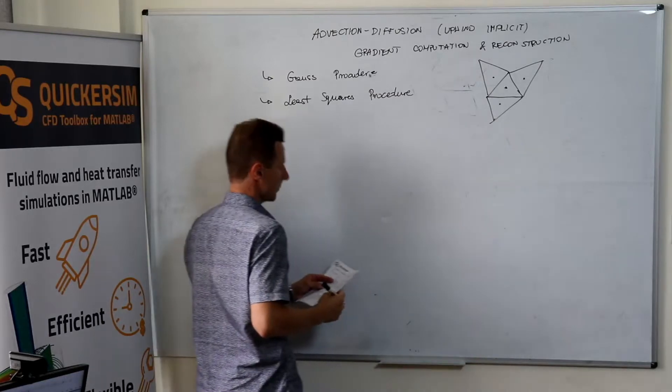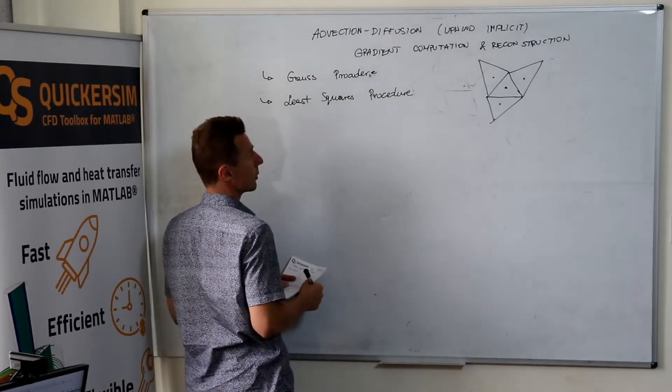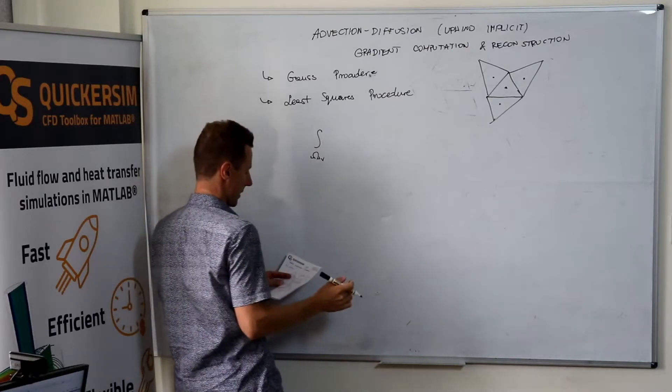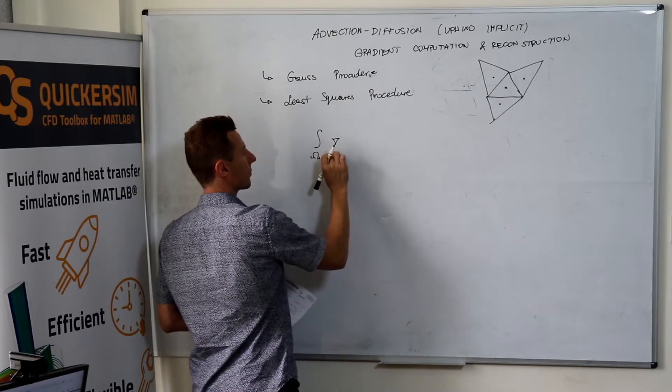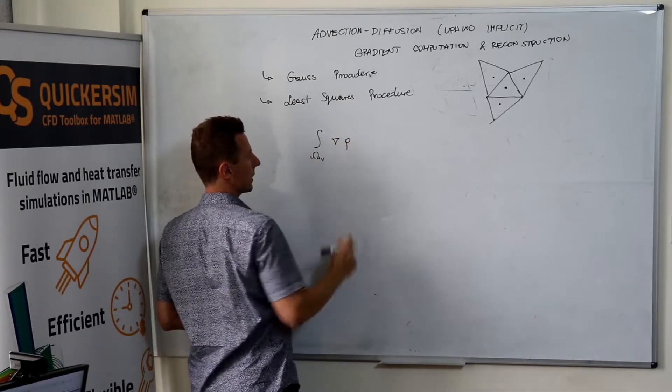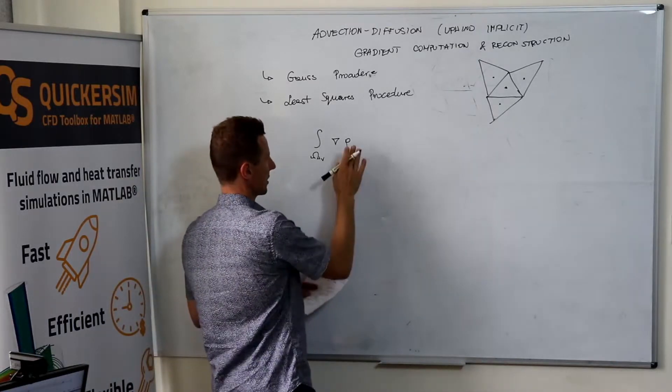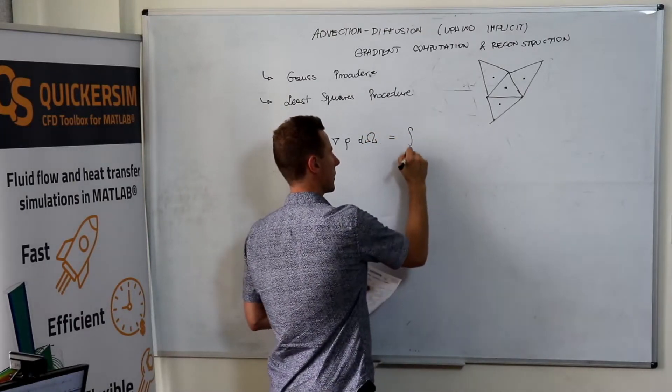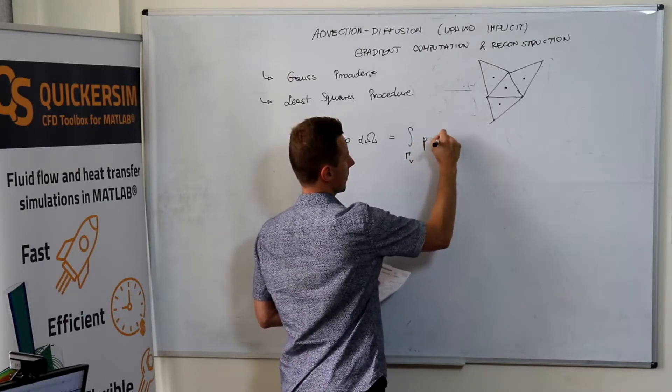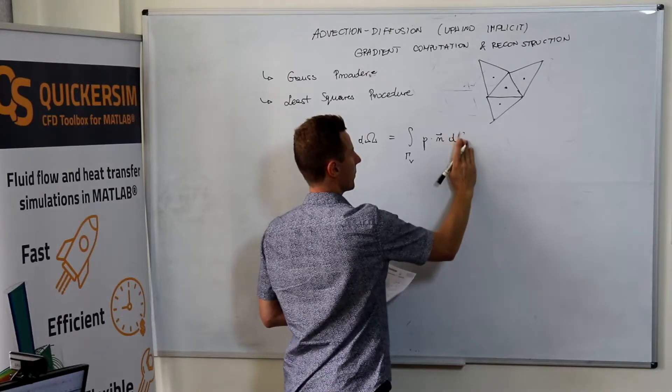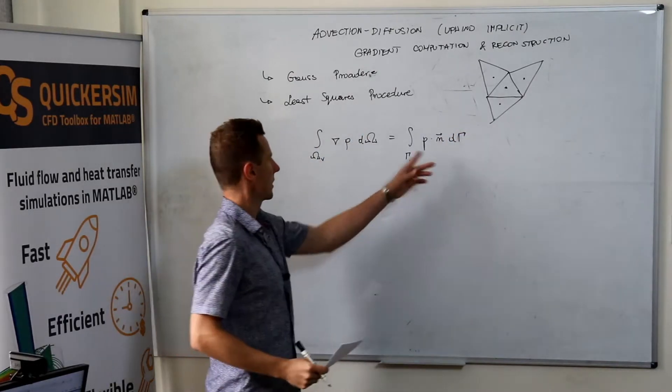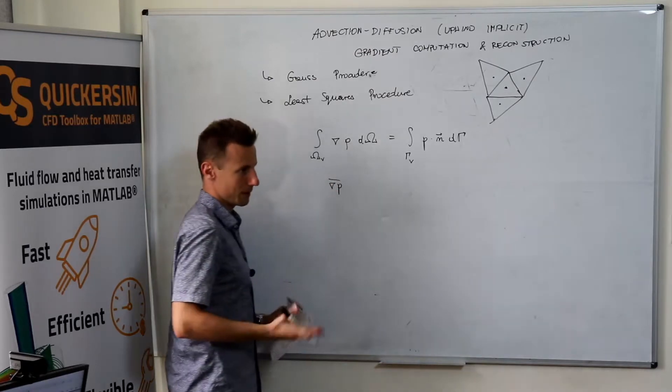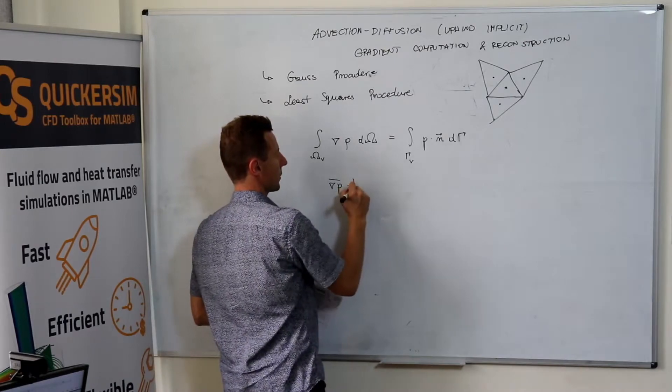The first one applies the Gauss theorem, so basically a very simple observation that if you write the integral of the domain of the cell from the gradient of some quantity, let it be P, whatever it is, not necessarily pressure, times d omega, it can be calculated as the integral of something like that. Obviously, this one in finite volume discretization is nothing else as the mean gradient at the cell, average gradient, times V.